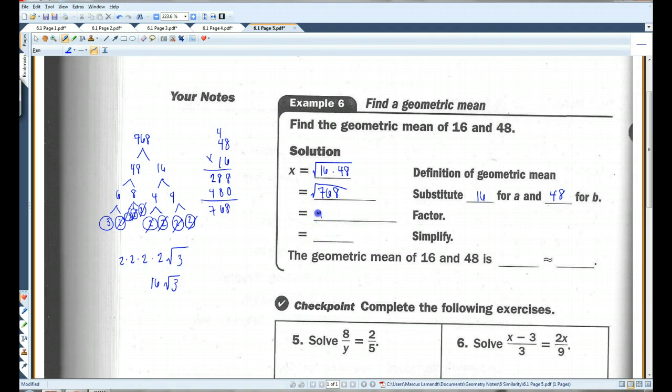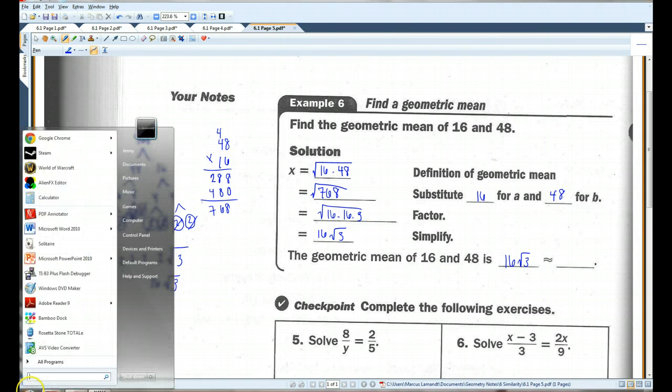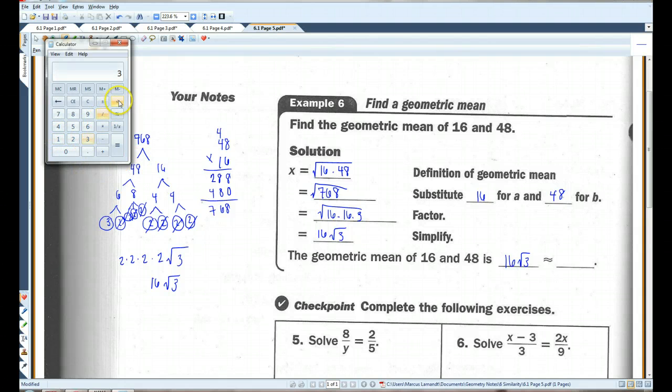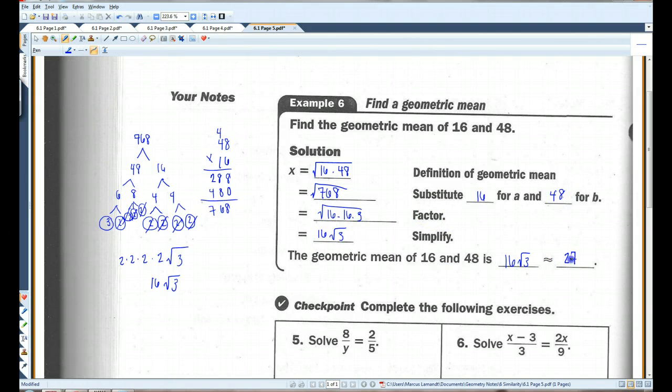I'm not sure why they have two extra steps. I suppose I could write it like this. 16 times 16 times 3. You could skip this step if you want. 16 root 3. So the geometric mean of 16 and 48 is 16 root 3. And if I were to take out my calculator, square root of 3 is that, times 16. This would be approximately 27.7.